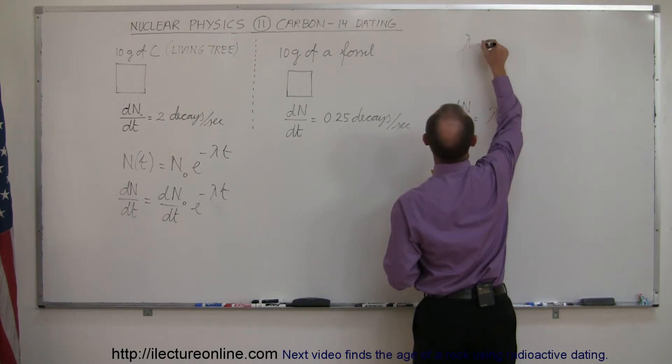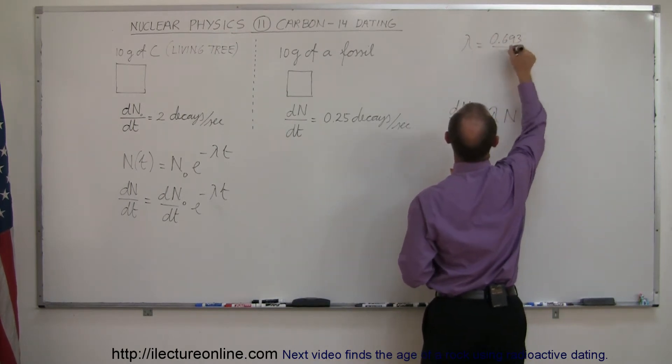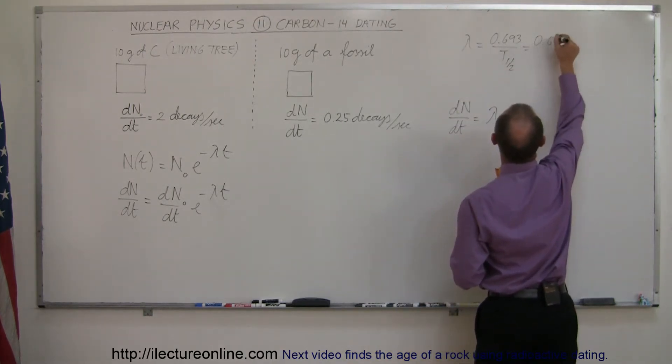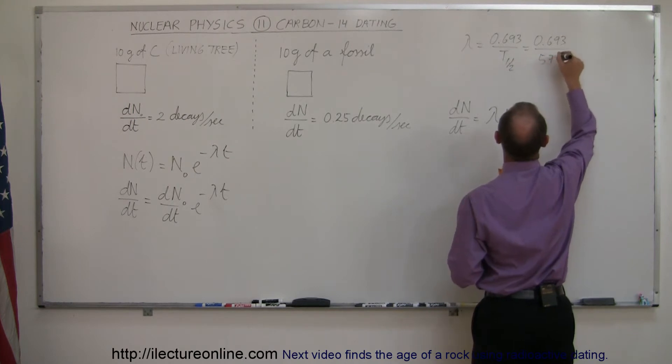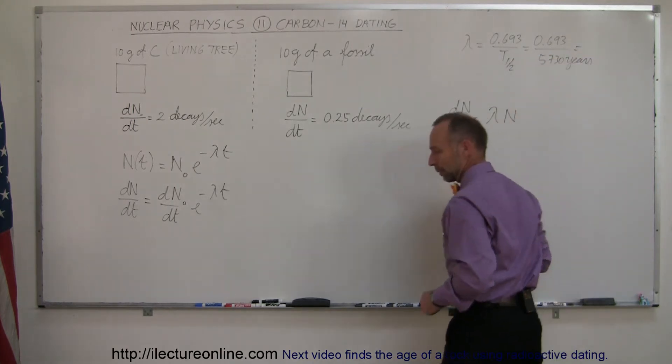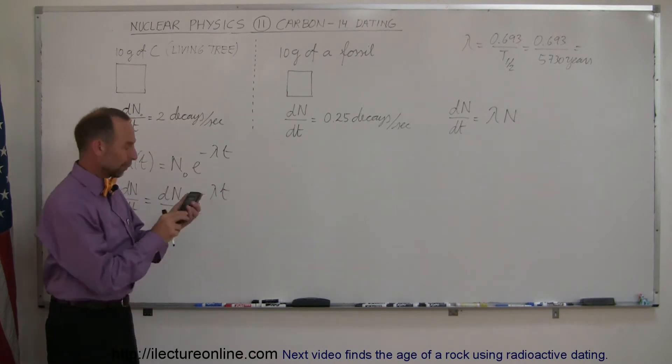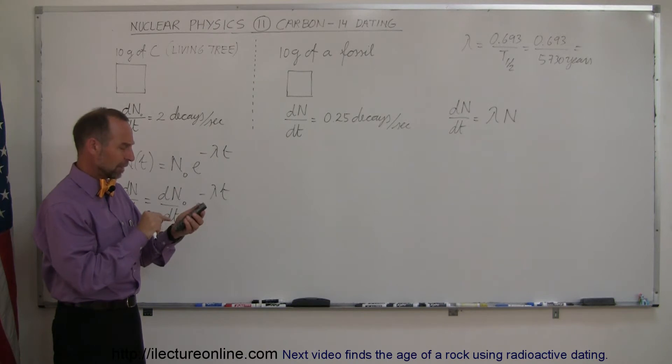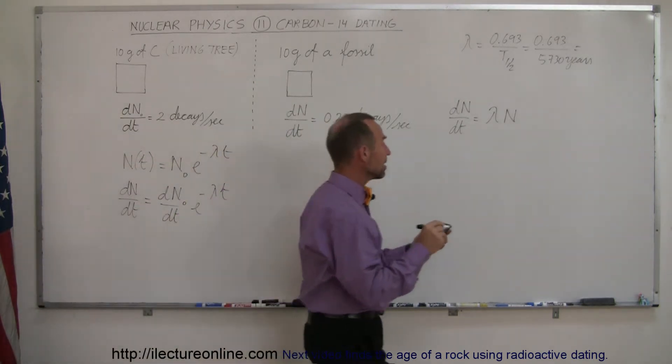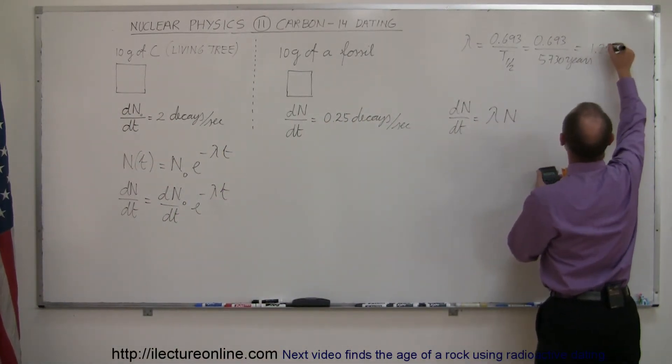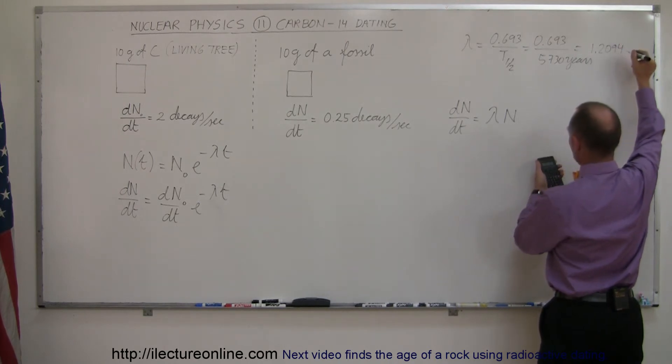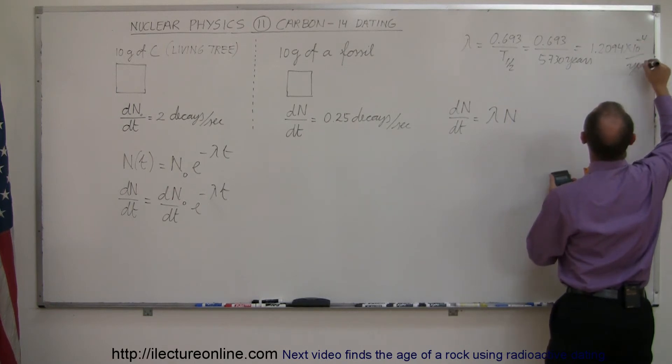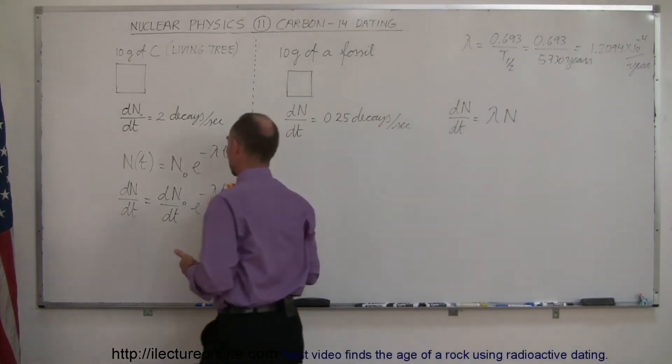The decay constant is equal to 0.693 divided by the half-life. So that's equal to 0.693 divided by 5,730 years. So if we grab our calculator, we can figure out what that is. So 0.693 divided by 5,730 equals 1.2094 times 10 to the minus 4 per year. So that's the decay constant for carbon-14.